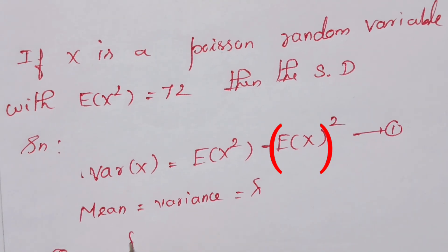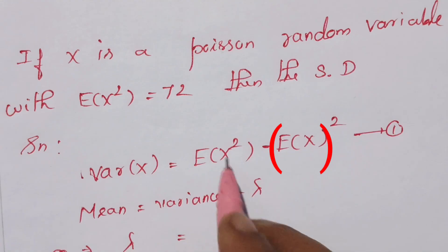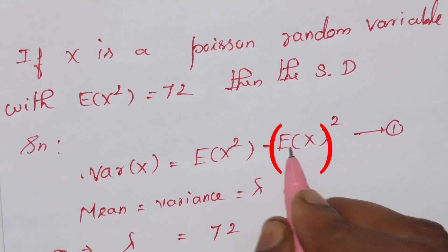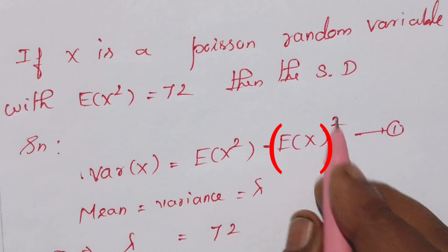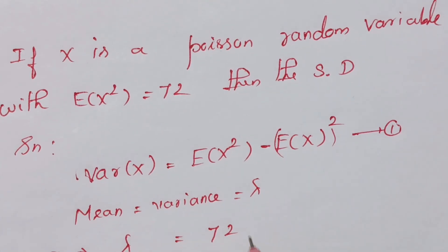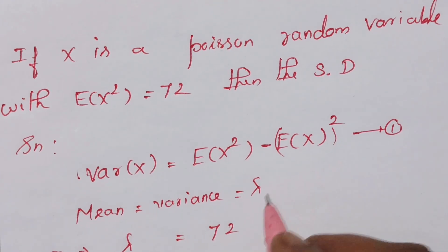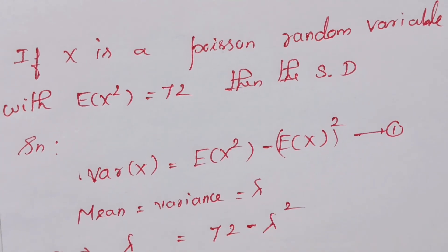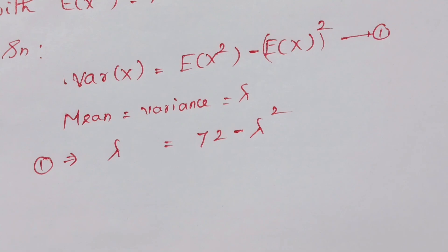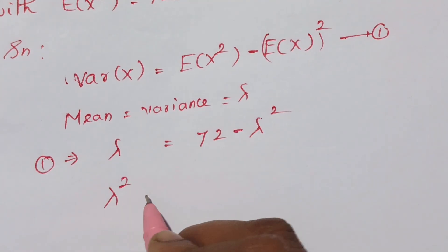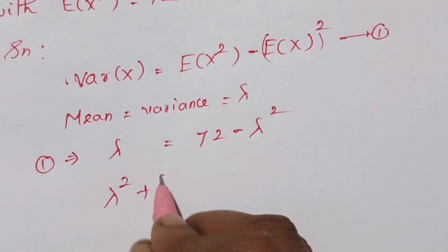Variance of X is lambda. So, E[X²] is 72 minus (E[X])². E[X] squared — that is the mean. E[X] is lambda. So, lambda squared is lambda. This gives us a quadratic equation: lambda squared plus lambda, with 72 on the left side.